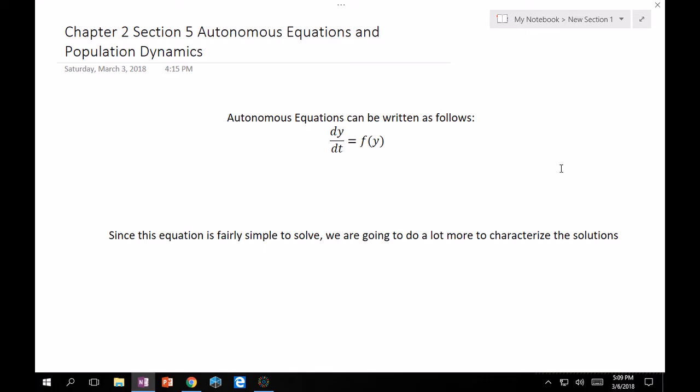Starting out, autonomous equations can be written as follows: dy/dt is equal to f(y). So you'll notice it's first order, so the first order derivative is going to equal a function that is strictly only a function of the dependent variable. So you could have something like dx/dt is equal to f(x), dp/dt is equal to f(p), whatnot, and so that's the only restriction that we have.